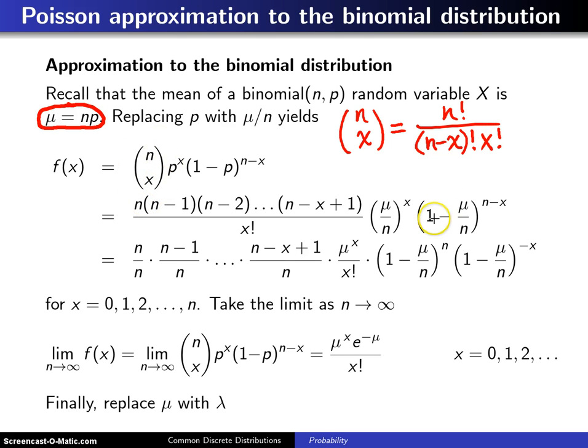Now in this next step, going from this step right here to this step, 1 minus mu over N to the N minus X power is broken up into two terms, namely 1 minus mu over N to the N and 1 minus mu over N to the negative X. Notice you have like base, add exponents, but you're doing it in reverse here to break it up.